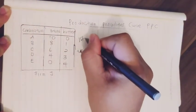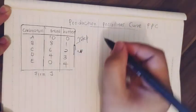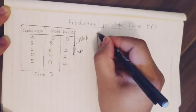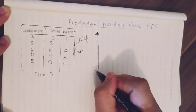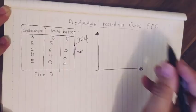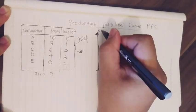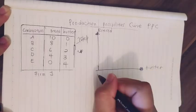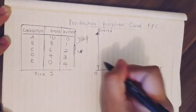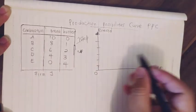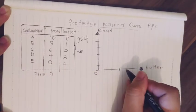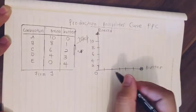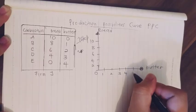First, we need to draw a simple figure. Here is the axis for bread and here is the axis for butter. We set up the scale — let's say two, four, six, eight, and ten on the bread axis, and one, two, three, four, and five on the butter axis.